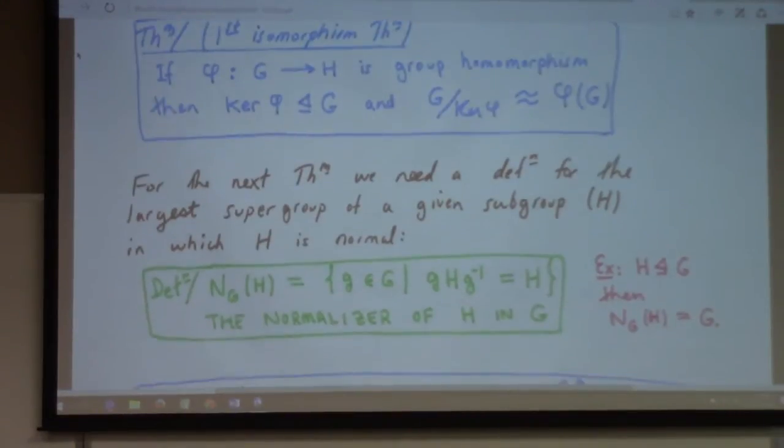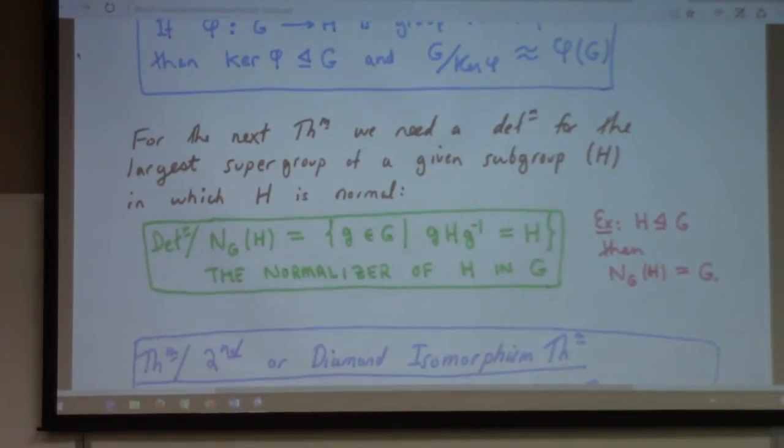It has three less known, sort of big brothers, I guess, or little brothers. I don't know what you want to call them. Anyway, related theorems. The second, third, and fourth isomorphism theorems. So, in order to discuss those, we need to talk a little bit about the so-called normalizer.